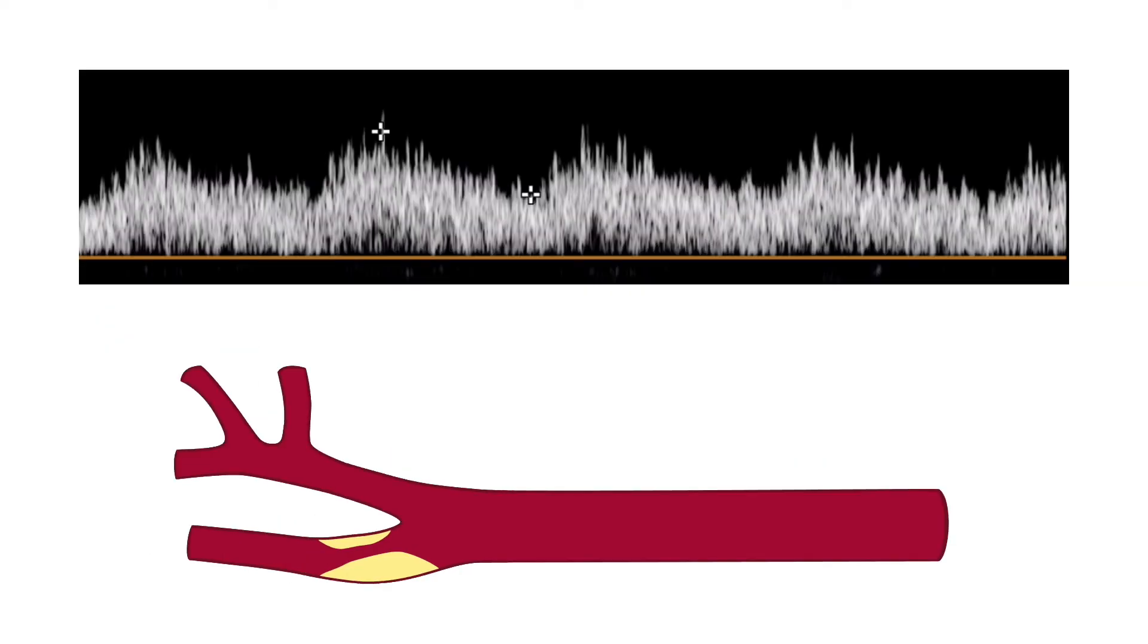In addition, a waveform demonstrating turbulent flow may be observed in the ICA, distal to a significant stenosis. If a stenosis hasn't been found on the B-mode and color flow images, but a turbulent waveform is detected, you must go back and confirm that a stenosis hasn't been missed.